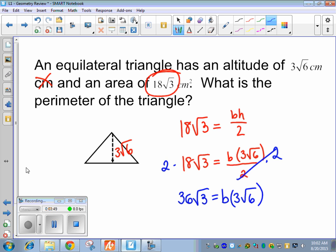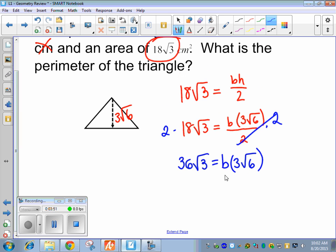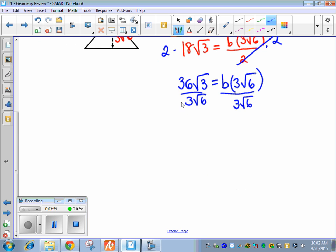And then we need to isolate the b, so we're going to divide by 3 root 6. So you can simplify outside numbers, and you can simplify inside numbers. So this reduces here. 3 goes into 36 12 times. And this is kind of weird, but we can reduce these to 1 half, because they're both inside numbers.